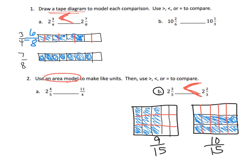The point of having both the area model and the tape diagram is that sometimes just drawing the tape is good enough to see that one fraction is larger than another, without needing common denominators. Tape diagrams are most useful when one denominator is easily turned into the other. But when you have denominators where you can't easily convert — like three and five — the area model is really easy for getting common denominators: make vertical slices for one fraction, horizontal slices for the other, and you're practically there.